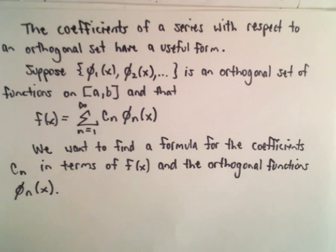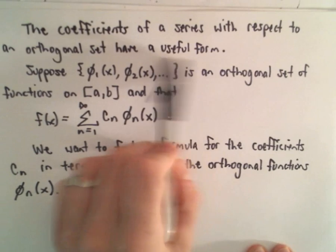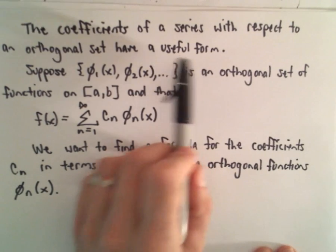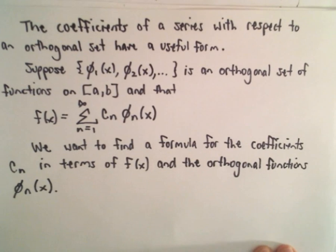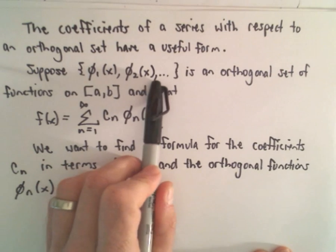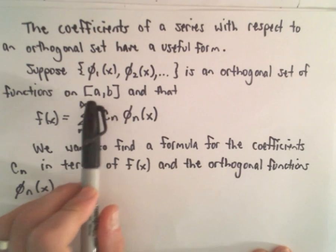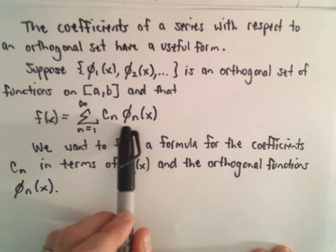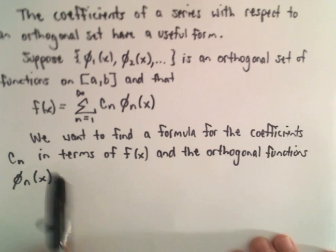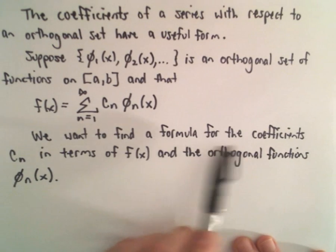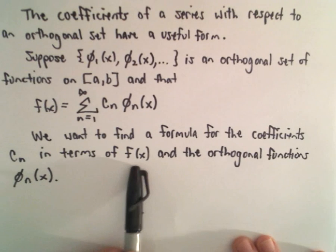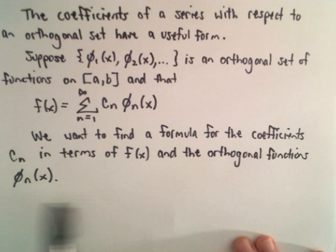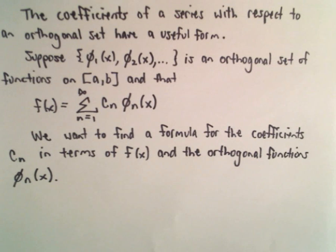The coefficients of a series with respect to an orthogonal set have a useful form — we can produce a formula for them. We've got an orthogonal set of functions on the closed interval a to b, and f of x is the summation from n equals 1 to infinity of c sub n times phi sub n of x. Our whole goal is to find a formula for the coefficients c sub n in terms of f of x and the orthogonal functions phi sub n of x.